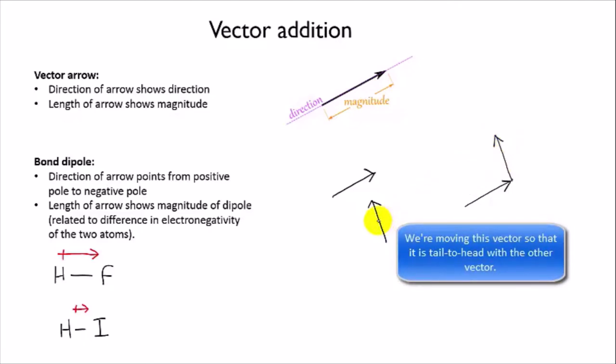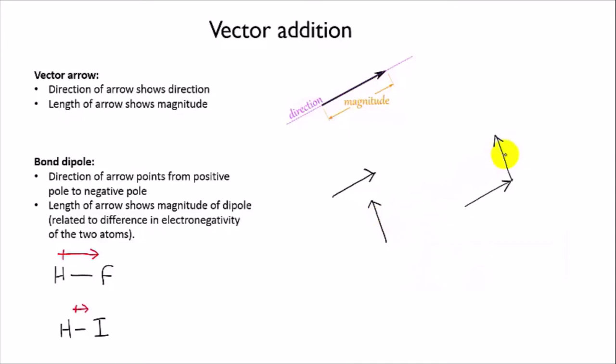So you can see that this vector here is exactly the same as this one, if my drawing were perfect, and all I've done is shift it so that its end is touching the end of the other vector.